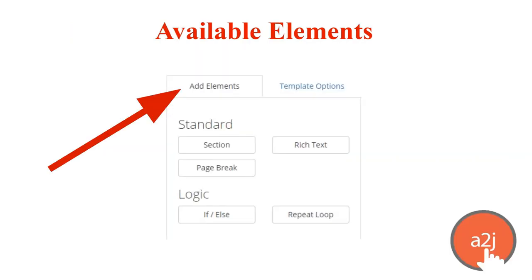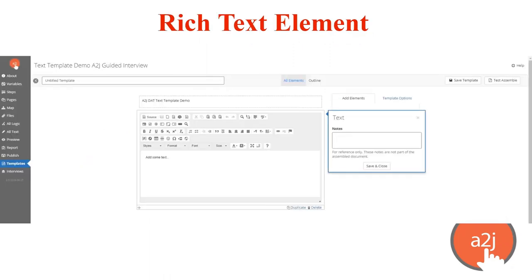When you are ready to build out the meat of your template, you toggle over from the template options to the add elements section of the toolbar available in the DAT text template. The elements available are section and page break, rich text element, if-else logic, and repeat loops. Let's dive into the rich text element — it's the one you're going to spend the most time in if you are creating templates with the text template editor. The rich text element is where you type out your content and add variables to your template.